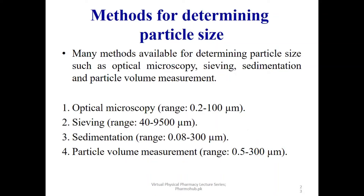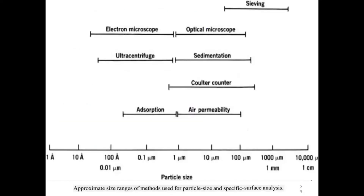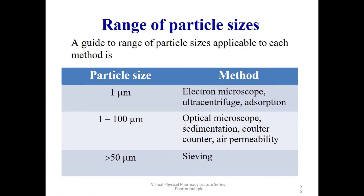The four main methods of particle size determination are optical microscopy, sieving, sedimentation, and particle volume measurements. A chart shows the approximate size ranges for each technique. Optical microscopy covers 1 to 100 micrometers. For particles around 1 micrometer, electron microscopy, ultracentrifugation, and adsorption are used. For the intermediate range, optical microscopy, sedimentation, Coulter counter, and air permeability are used. For particles greater than 50 micrometers, sieving is used.